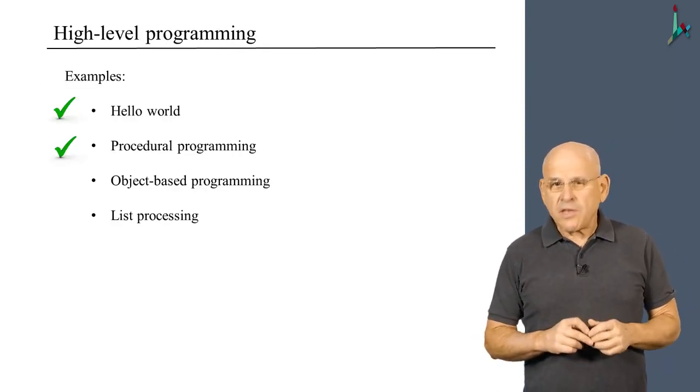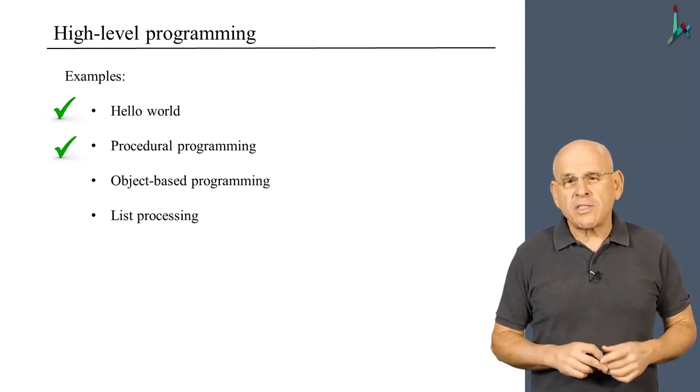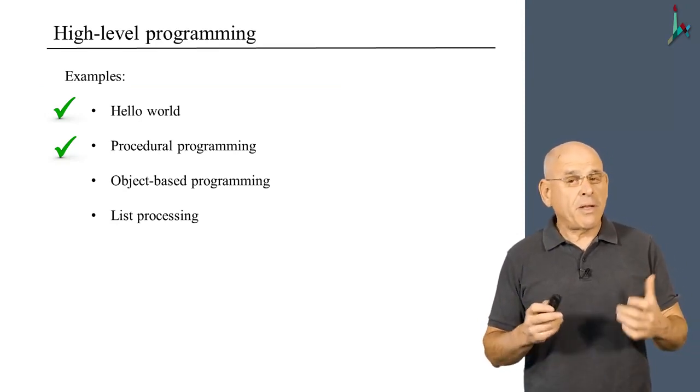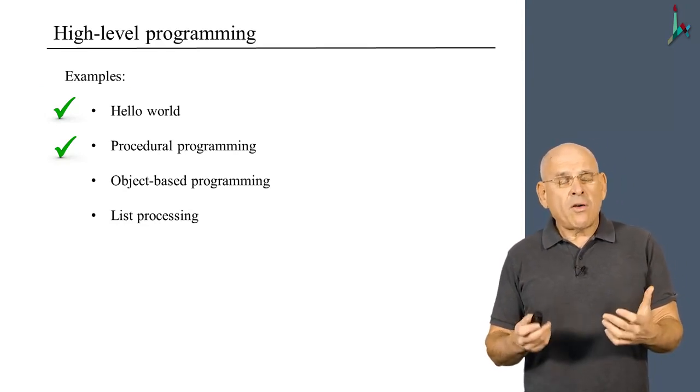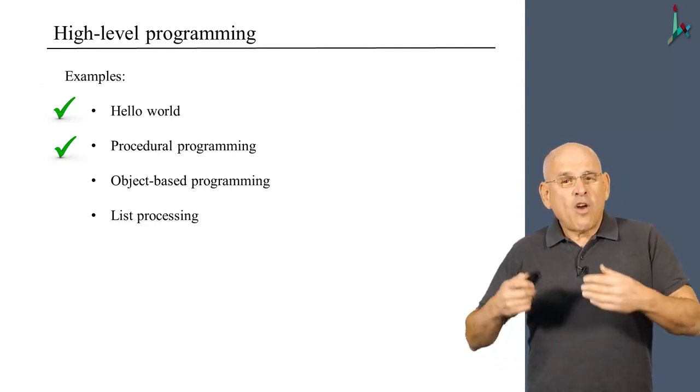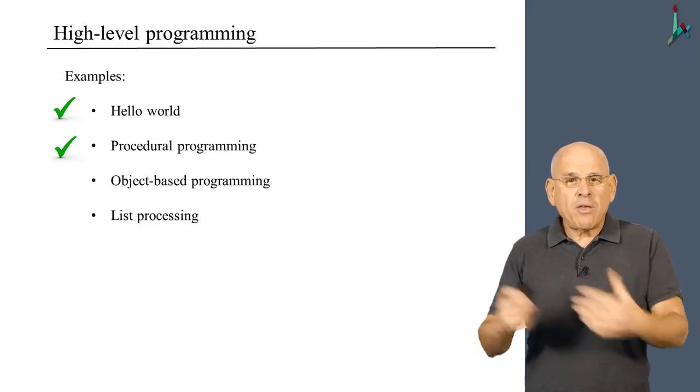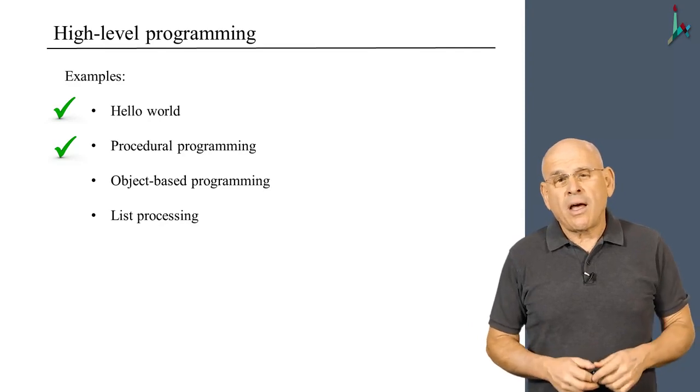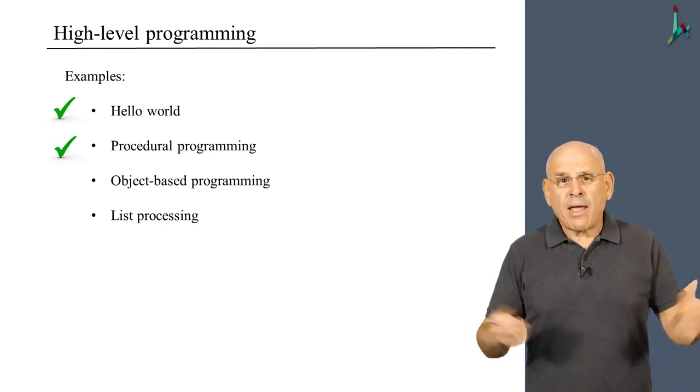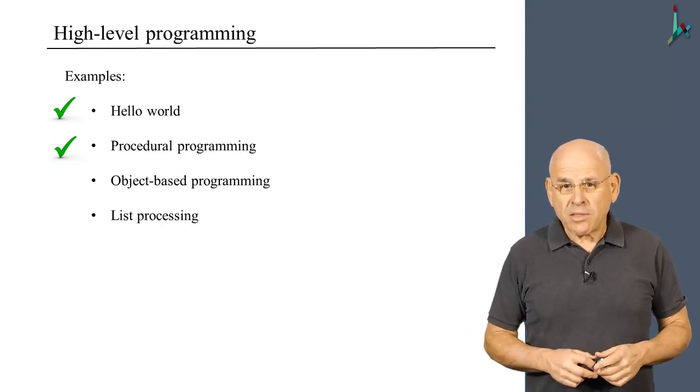All right, so this is the end of this unit. Throughout the unit, we saw two very simple examples of Jack programming. And in fact, what we saw is how an object-oriented language can be used to write code that has no objects and no object orientation, but just very simple, plain sequential processing.